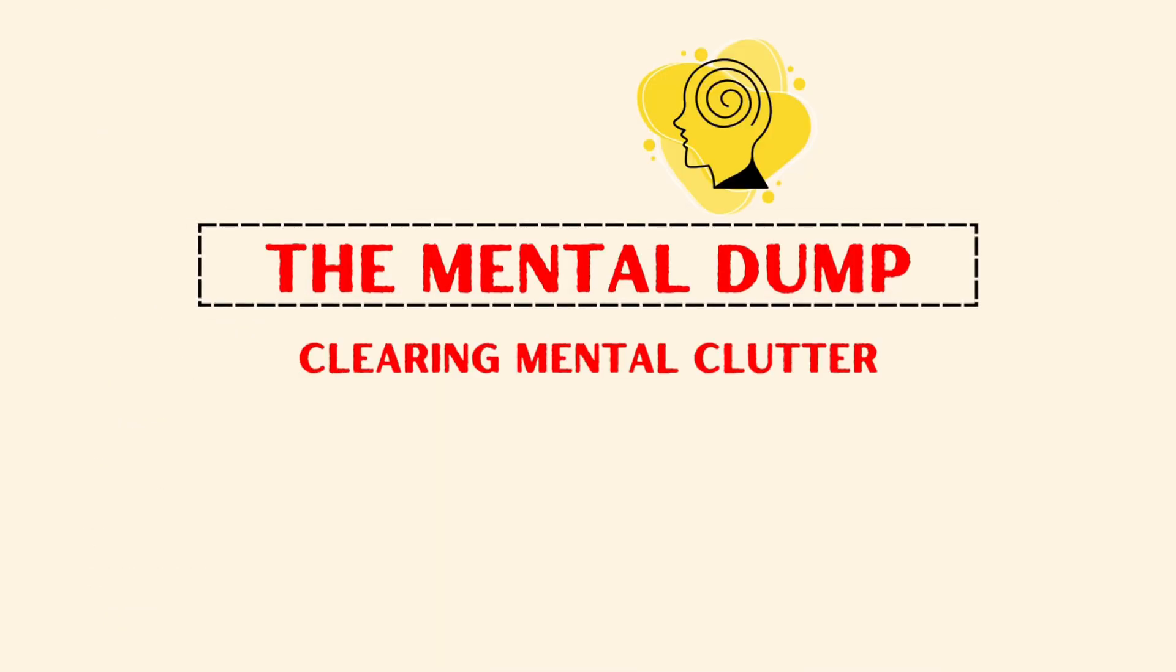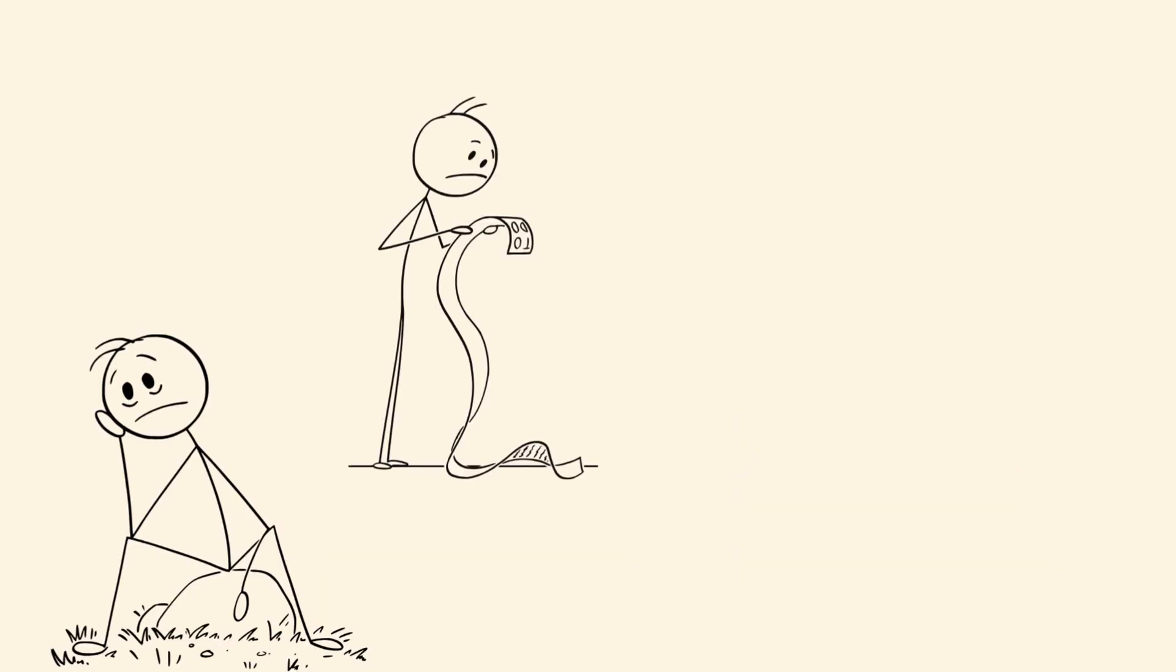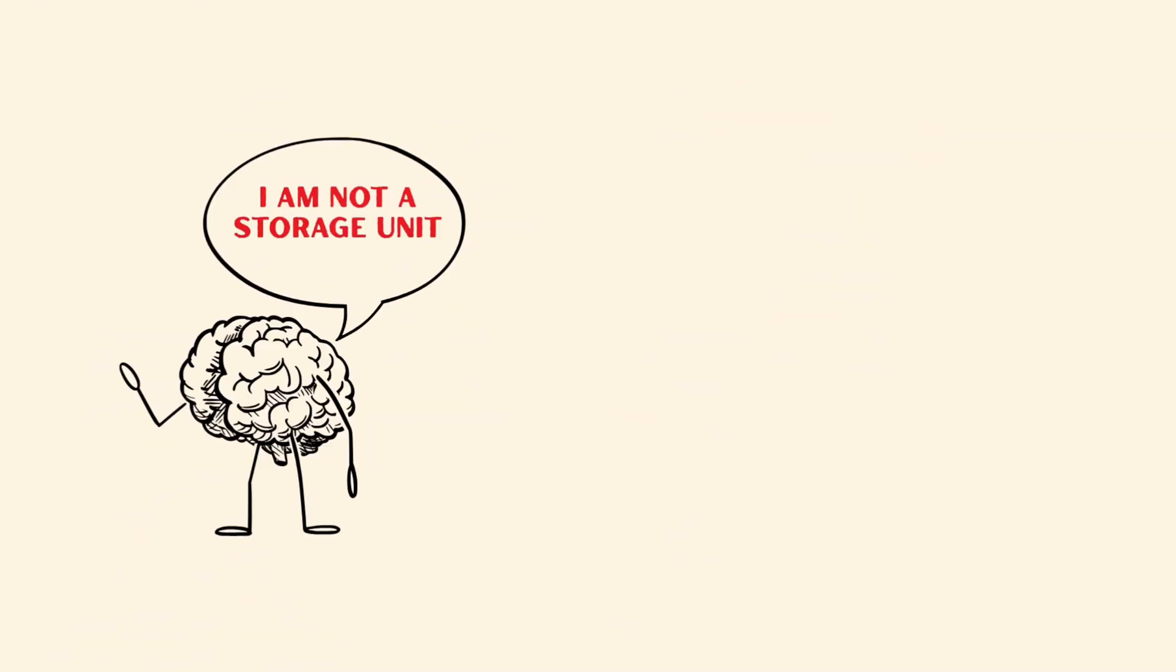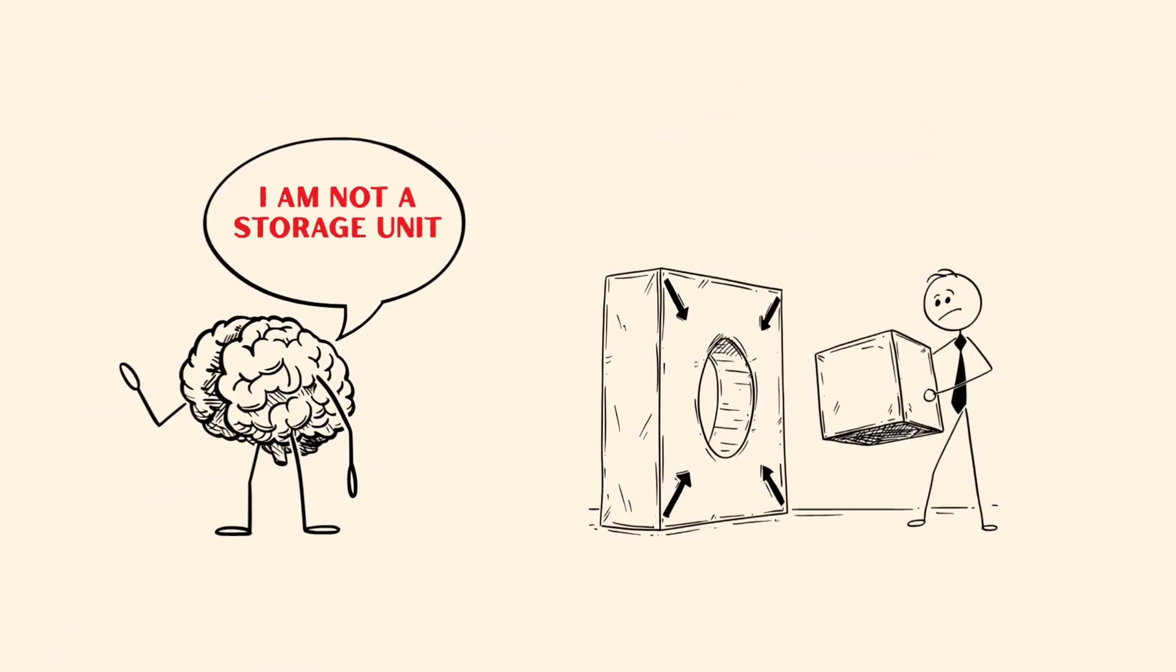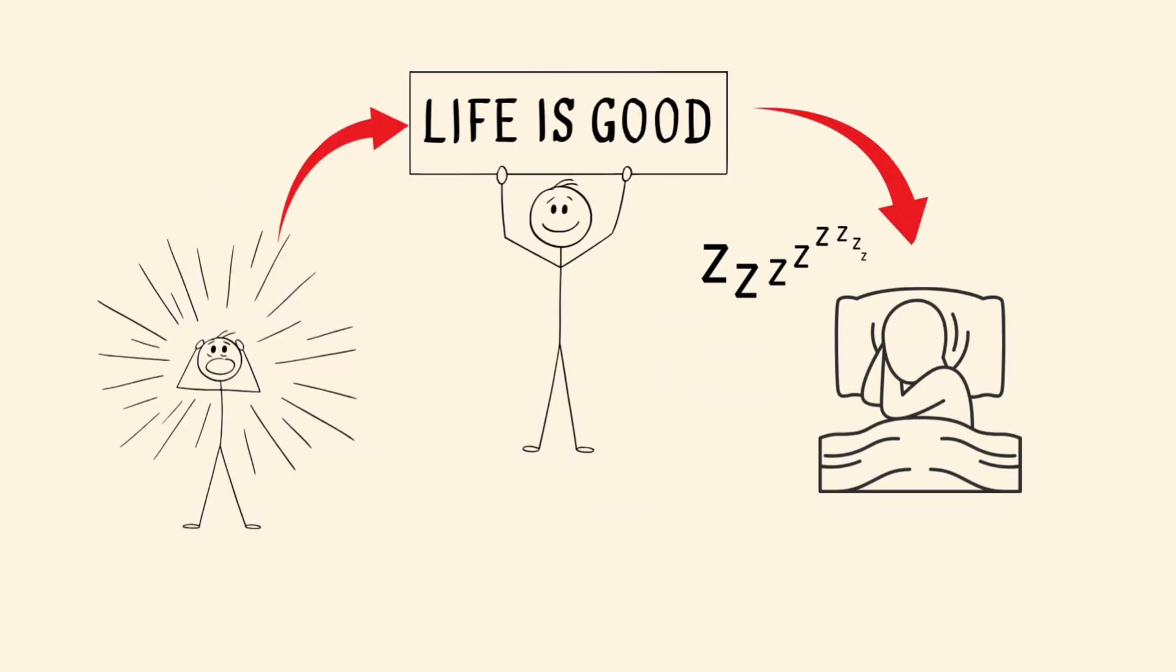The mental dump clearing mental clutter. At 9.30 p.m., Ethan dumps every thought onto a notepad. Worries. To-dos. Ideas. Fast and messy. Why? Because the brain isn't a storage device. It's a problem solver. Clearing your mental cache kills anxiety and deepens sleep.